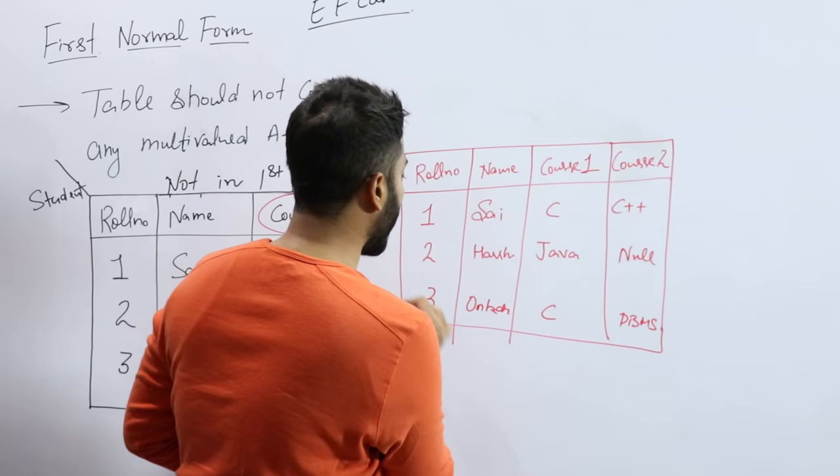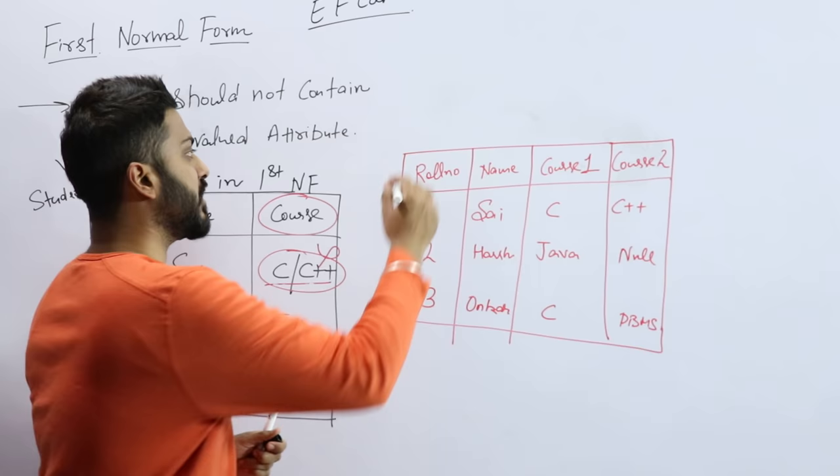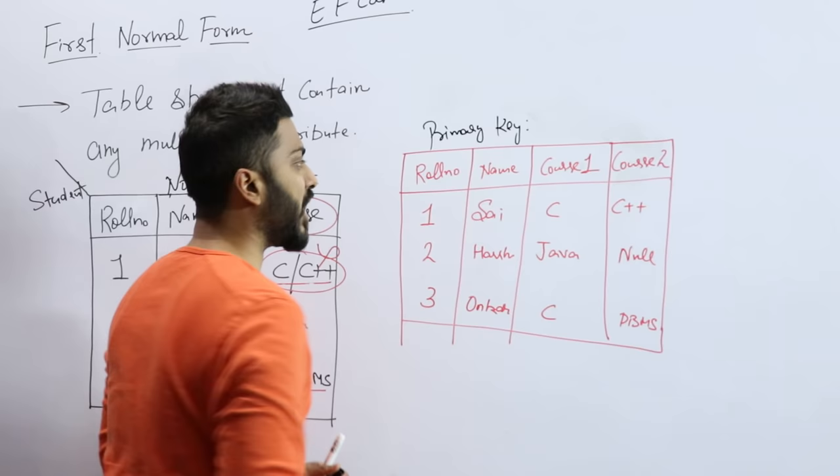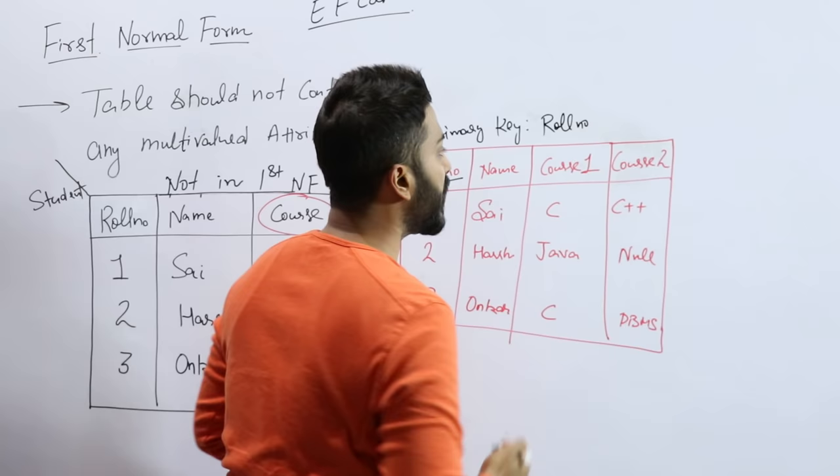So this will be the second kind of representation. You can be asked what can be the primary key? The same question: what can be the primary key in this table? The primary key in this can be roll number. Only roll number alone can be a primary key. So this is a simple primary key, that is roll number.